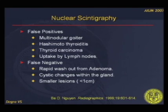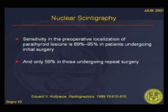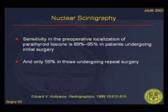False positives in nuclear scintigraphy include multinodular goiter, Hashimoto thyroiditis, and thyroid carcinoma including lymph node uptake. The sensitivity of nuclear scintigraphy is about 89 to 95% in patients prior to initial surgery, and only about 59% in those undergoing repeat surgery.